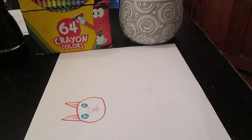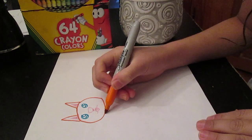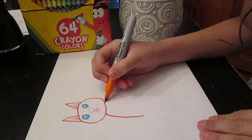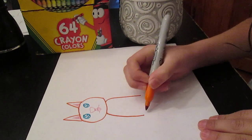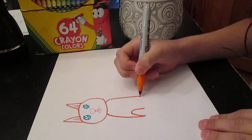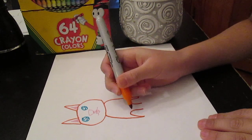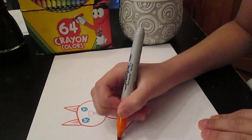You're going to want to use the orange Sharpie again and draw the body. The tail.